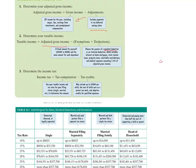You add your exemptions plus your deductions, subtract that sum from your adjusted gross income, and that gives you your taxable income. Then you compute your income tax using the tax table, and you get to subtract any tax credits. Tax credits include child care costs, adoption credits, and credits for energy-efficient purchases like a high-efficiency appliance or alternative-energy vehicle. Tax credits are really cool because they come right off your tax bill.